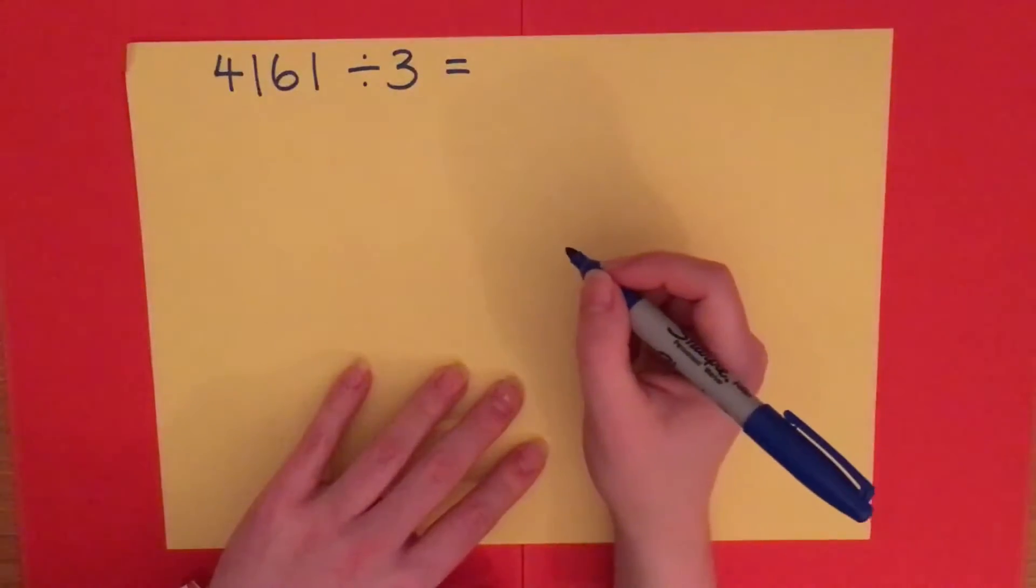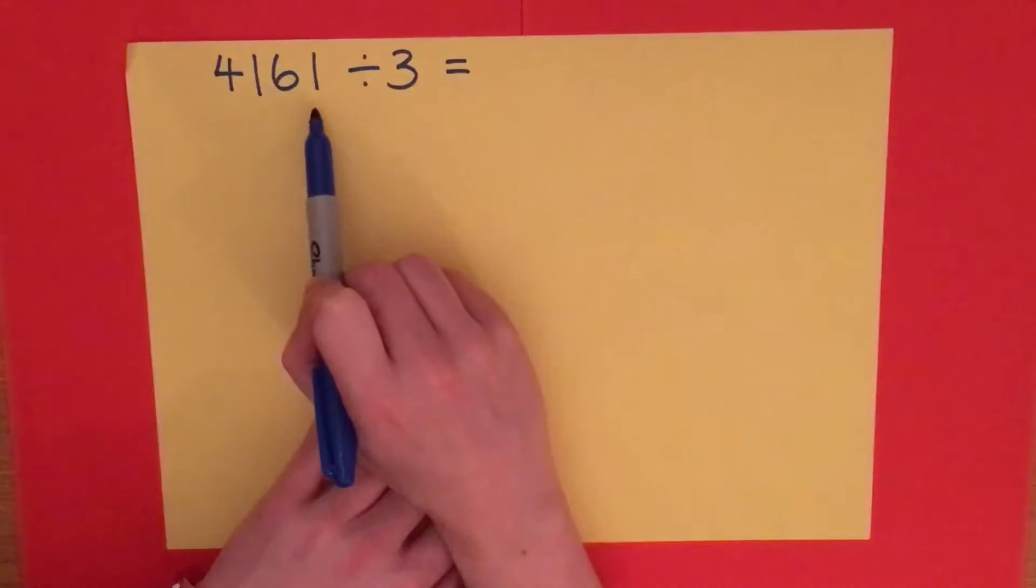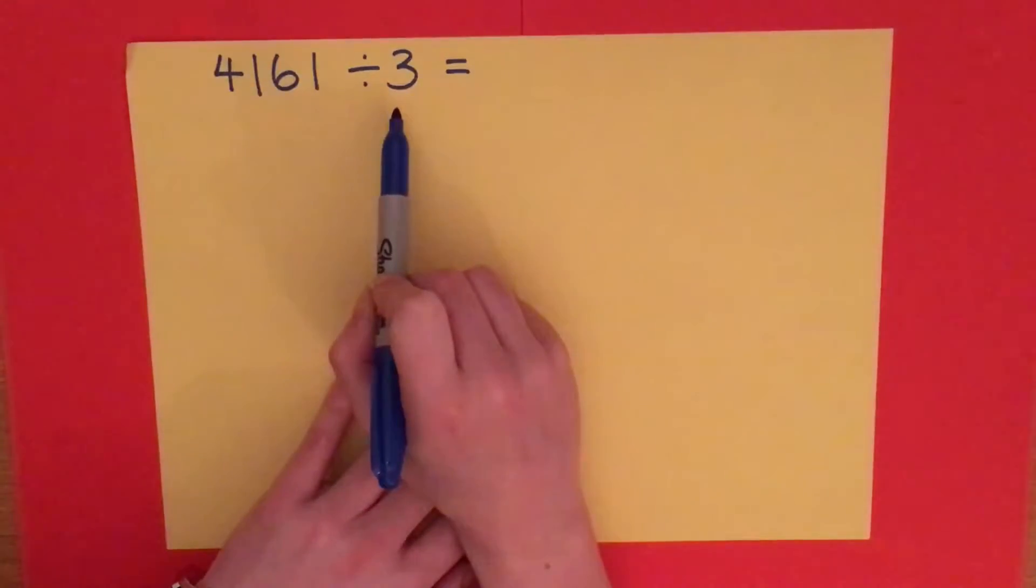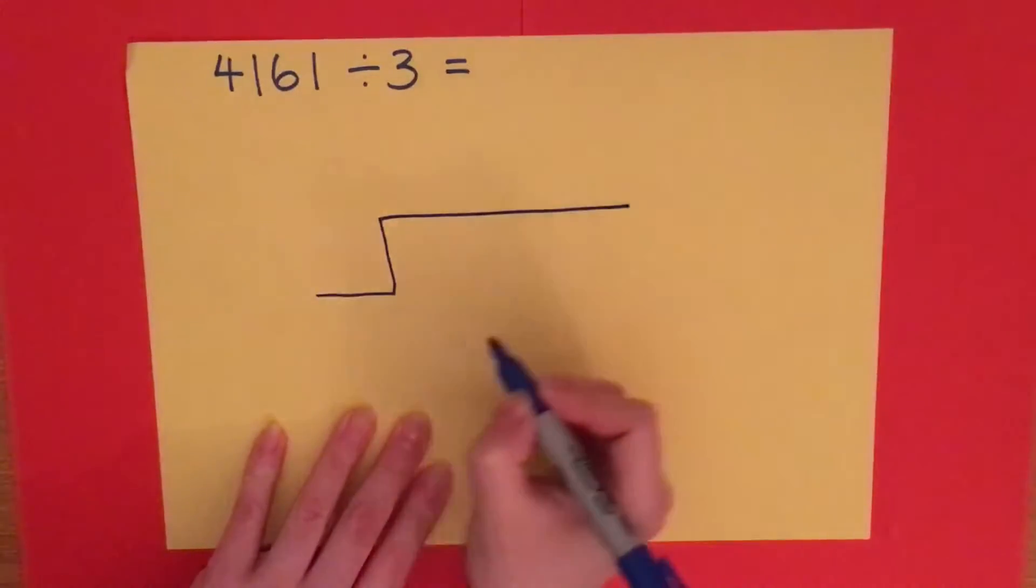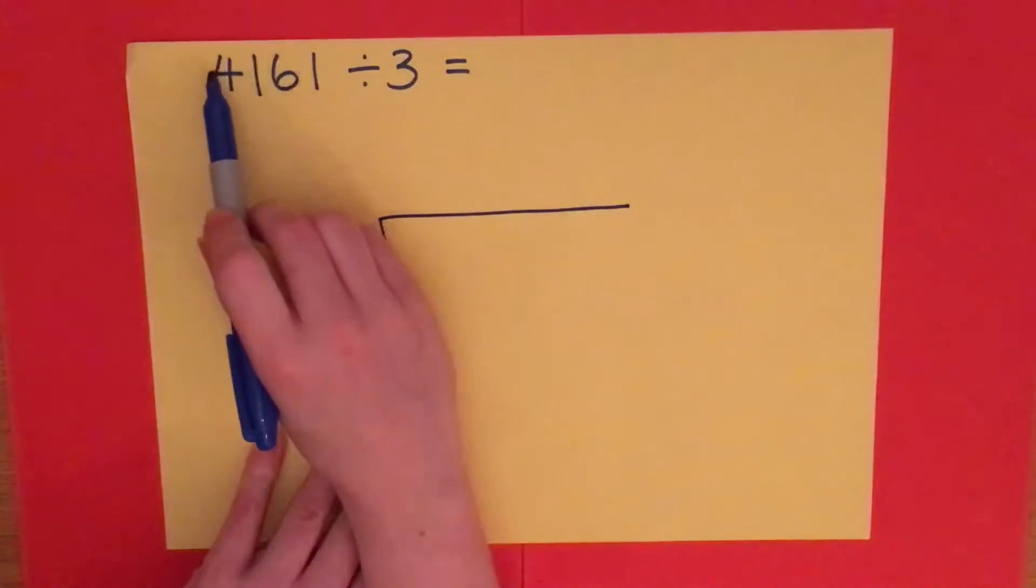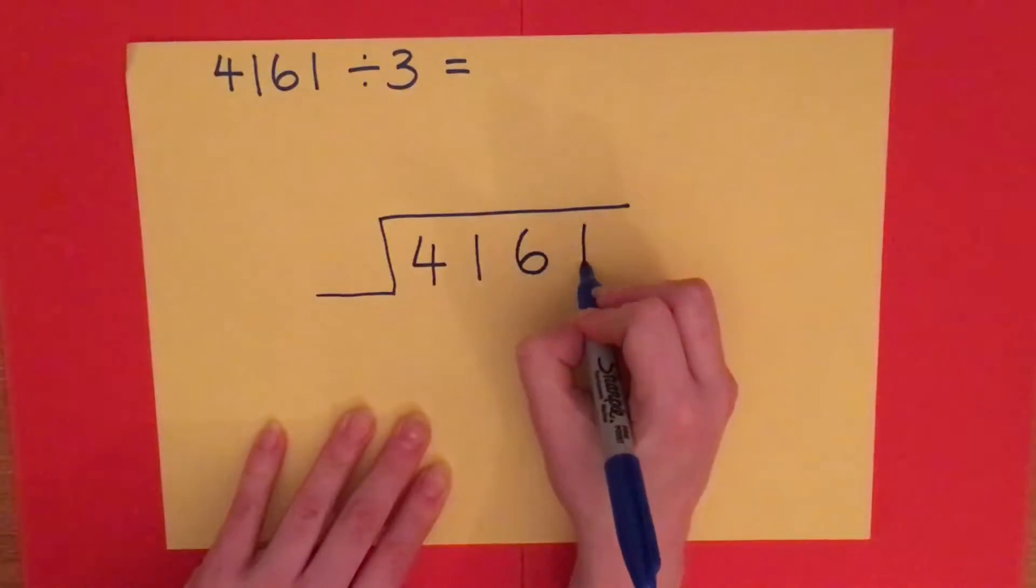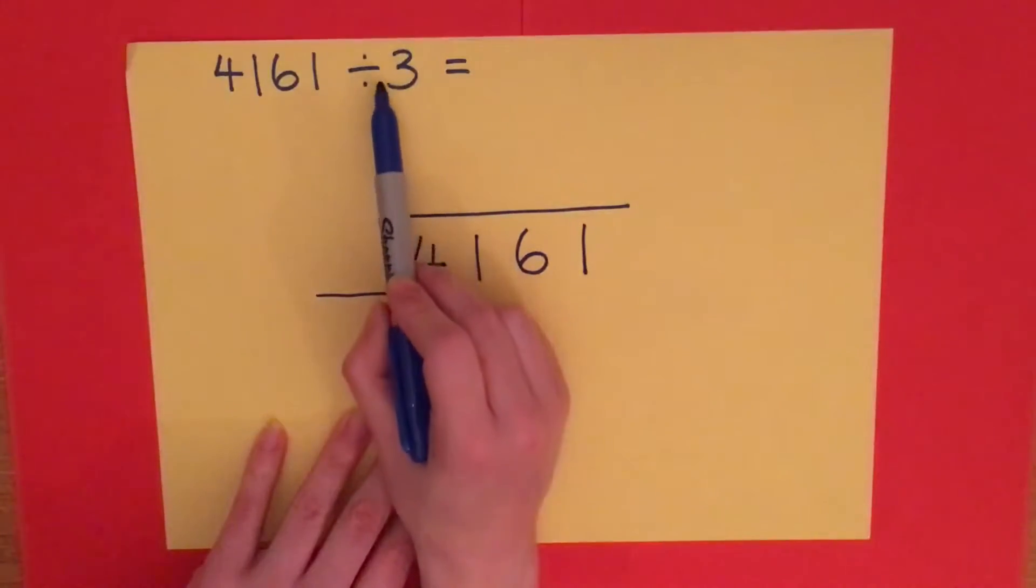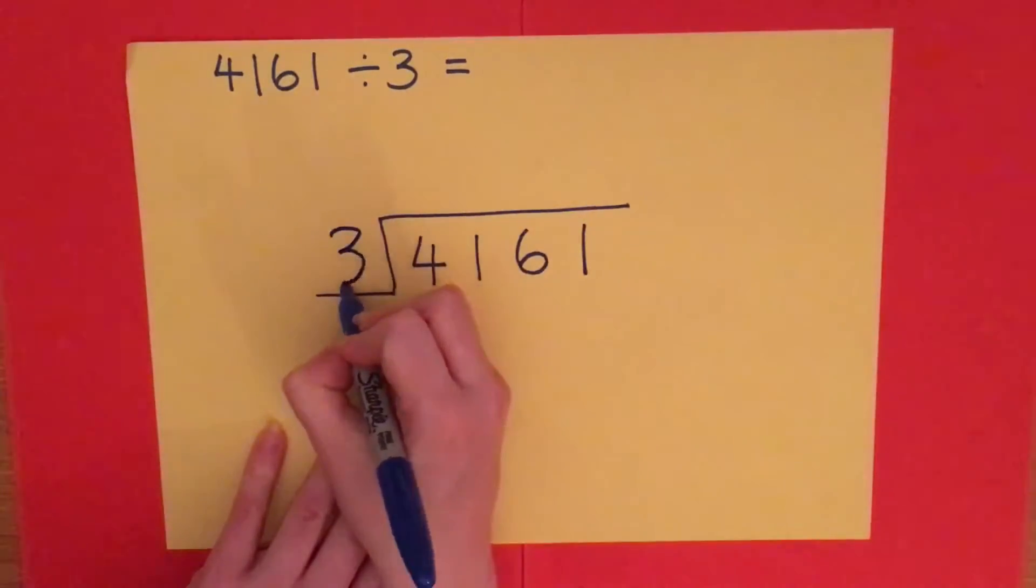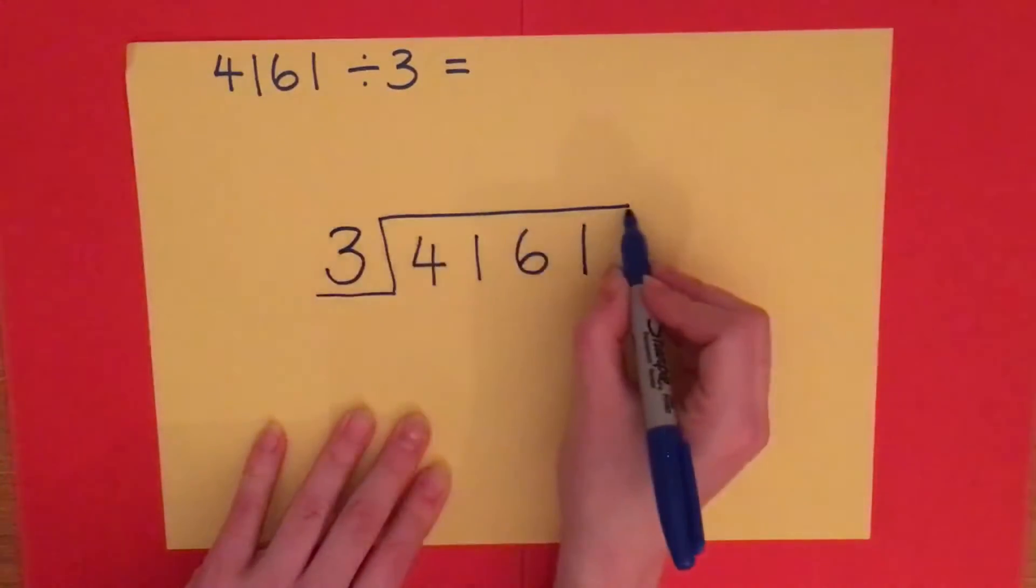Welcome to the next step in our short division series. Today we are going to divide 4,161 by three. I'm going to use the bus stop method and put the number I am dividing, 4,161, underneath my bus stop and the number I'm dividing by, which is three, outside my bus stop.